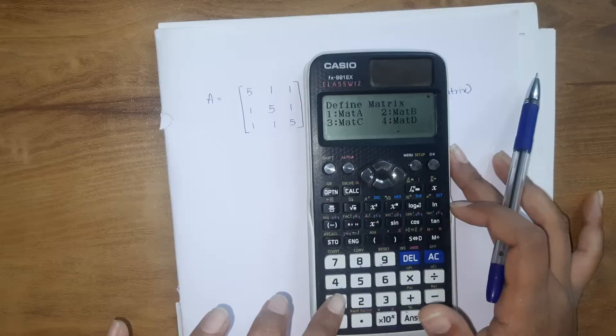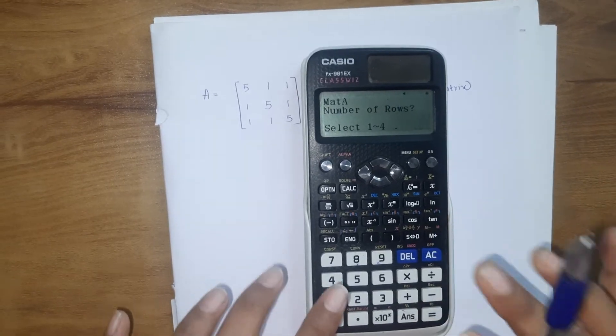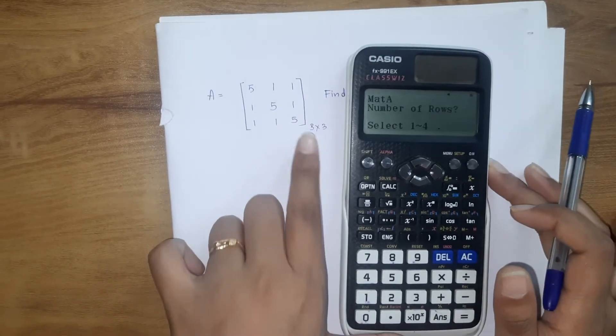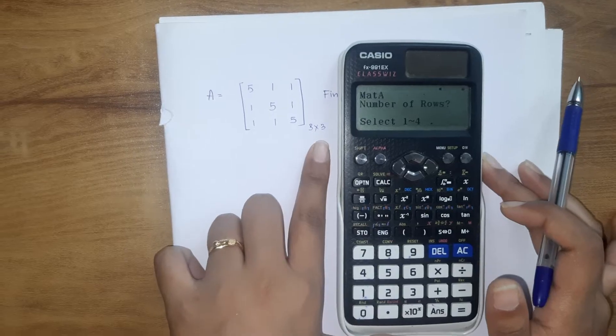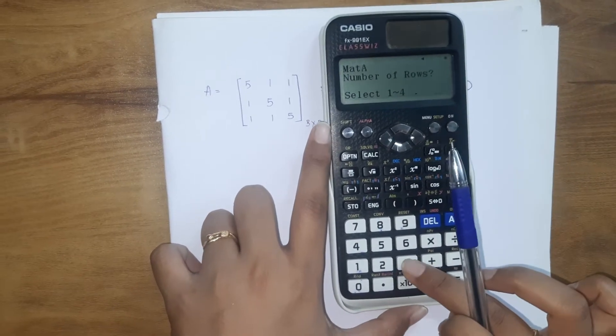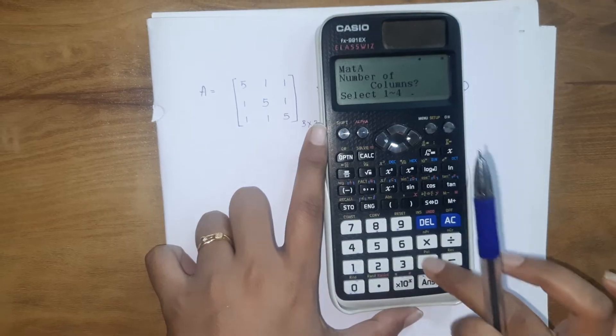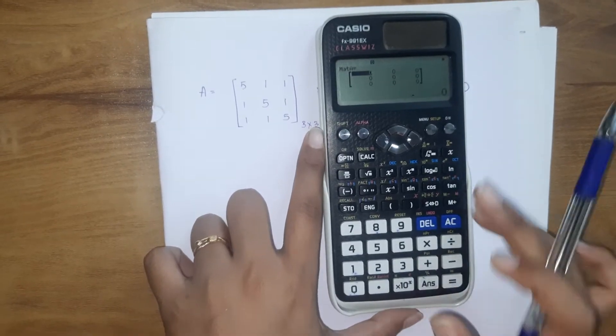Click on 1. It's asking for the number of rows and number of columns. It's a 3 by 3 matrix, so the number of rows and columns is 3. It's asking for columns, press 3.